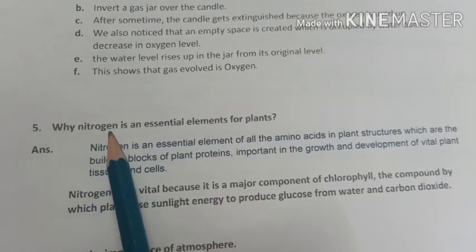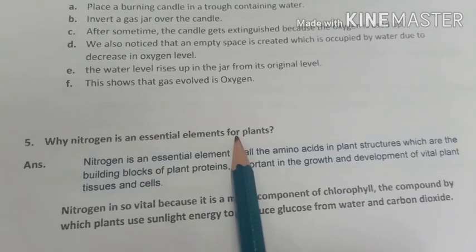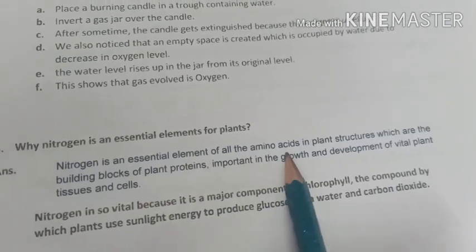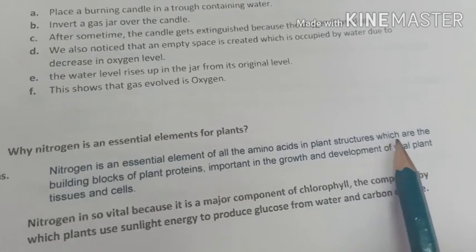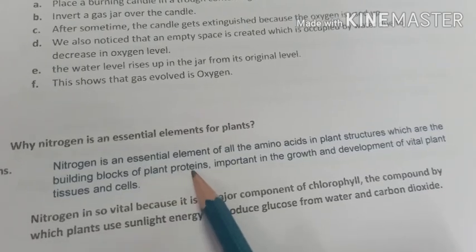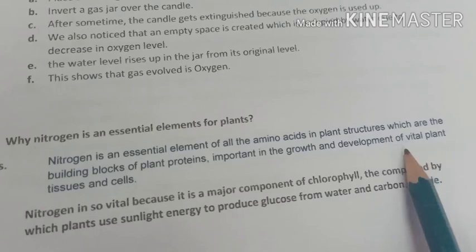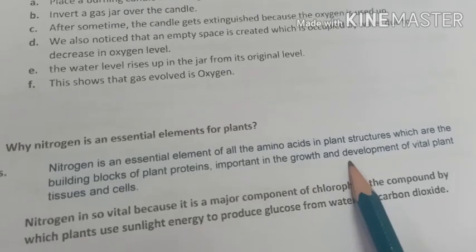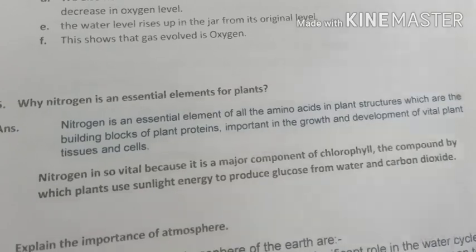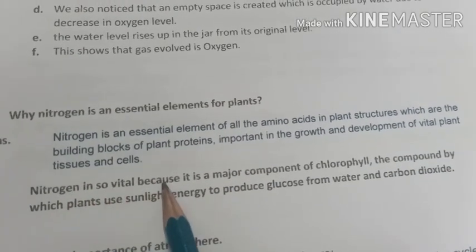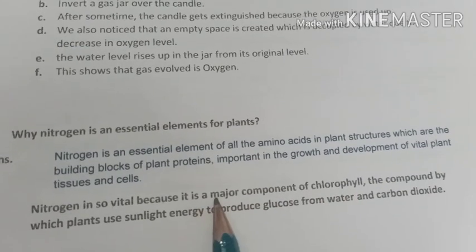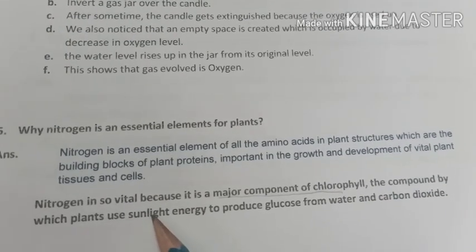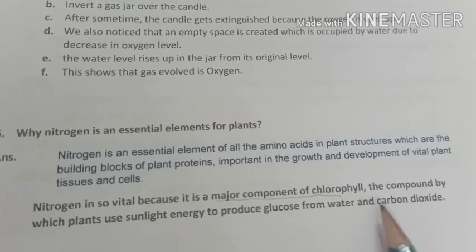Question number 5: why is nitrogen an essential element for plants? Answer: nitrogen is an essential element of all the amino acids in plant structures, which are the building blocks of plant proteins, important in the growth and development of vital plant tissues and cells. Nitrogen is also a major component of chlorophyll — the compound by which plants use sunlight energy to produce glucose from water and carbon dioxide.